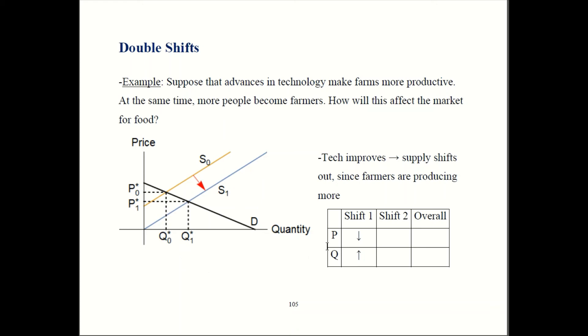So, you get a down arrow here for price. We have an up arrow for quantity. So, that's the first shift.